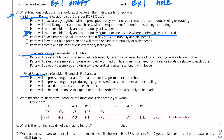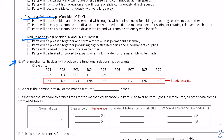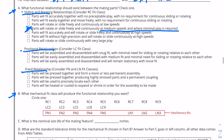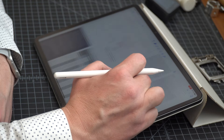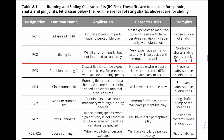Now that we know what we want, we need to figure out which class is going to give us that kind of relationship. That's what we do in part B: what mechanical fit class will produce the functional relationships we want? We know that we are going to be in the RC fit class. That means we're going to need to look at this row — RC1, RC2, all the way up to RC9 — to know what we want. We're going to go back to table 8.1, running and sliding clearance fits, to look in there and decide which one we want.